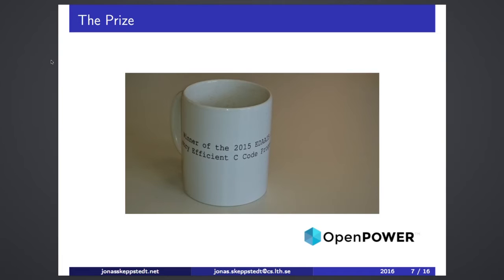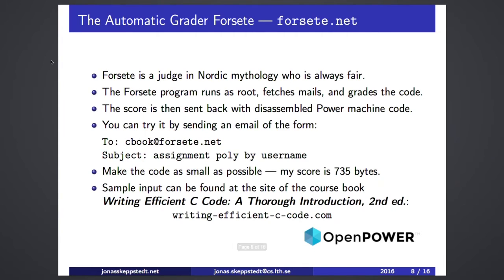This competition motivated the winners quite a lot. The automatic grader is called Forsettem — a Viking age judge who is always fair — and this program is also very fair. It runs as root, fetches emails, gives the score — pass, fail, and a number — and then returns the Power Machine code for the student's assignment. You can try it yourself by sending an email to cbook at forsettem.net, and you can find more details at the web page shown below.